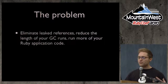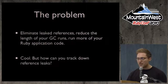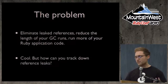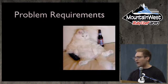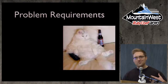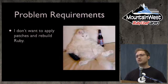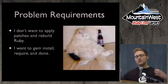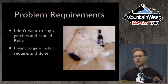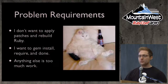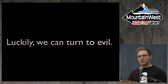If we eliminate leaked references, we reduce the length of GC runs, run more Ruby app code, and everybody's happy. But how can we track down these reference leaks? My requirements: I'm really lazy and I don't want to apply patches to Ruby or rebuild Ruby. I don't want to break binary compatibility with my extensions. I just want to do this once, have it work, and really just want it to be a gem — require a Ruby gem, do memory profiling, and be done. Luckily, Satan has my back.